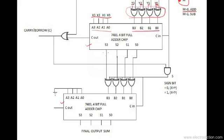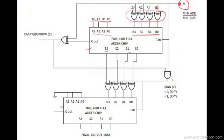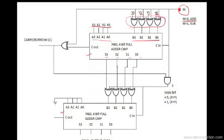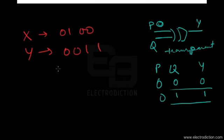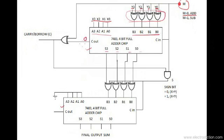The output is produced at the S3, S2, S1 and S0 outputs of the first chip. Now considering the situation with M set to 0, we have an AND gate that also gets a 0 input. If we just try and add these two numbers — X as 0100 and Y as 0011 — we get the result 1, 1, 1, 0. There is no carry, so the carry-out is 0.